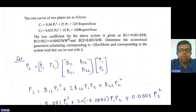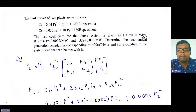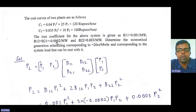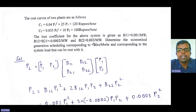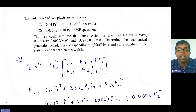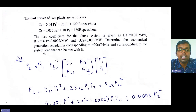The loss coefficients for the above system are given as: B11 = 0.001 per megawatt, B12 = B21 = minus 0.0002 per megawatt, and B22 = 0.003 per megawatt. We need to determine the economical scheduling corresponding to lambda = 20 rupees per megawatt hour, and the corresponding system load that can be met with it.